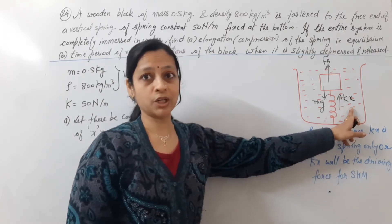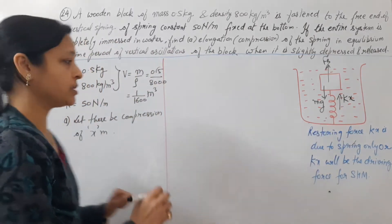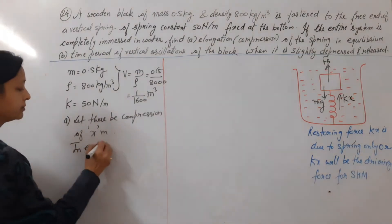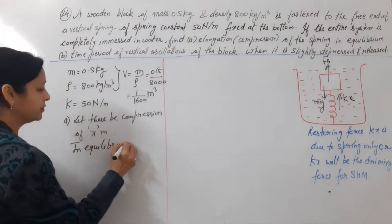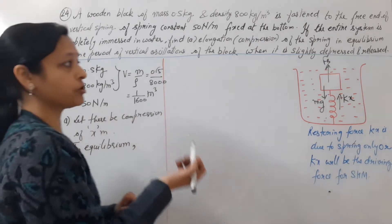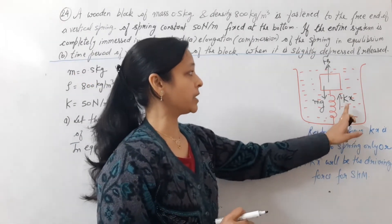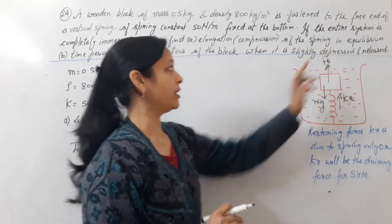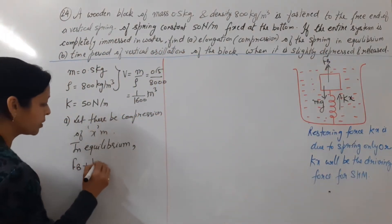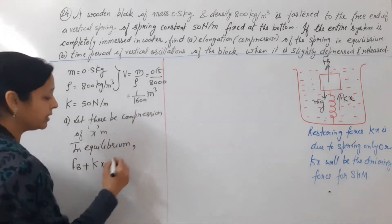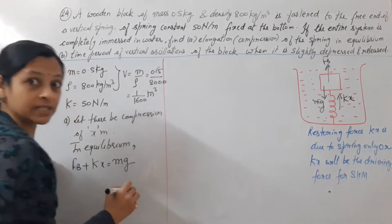Now we have forces in both directions. So in equilibrium position, we equate. In equilibrium position, total upward force is equal to total downward force. What is upward force? Spring force and buoyant force. And downward force is mg. Now we will put values.